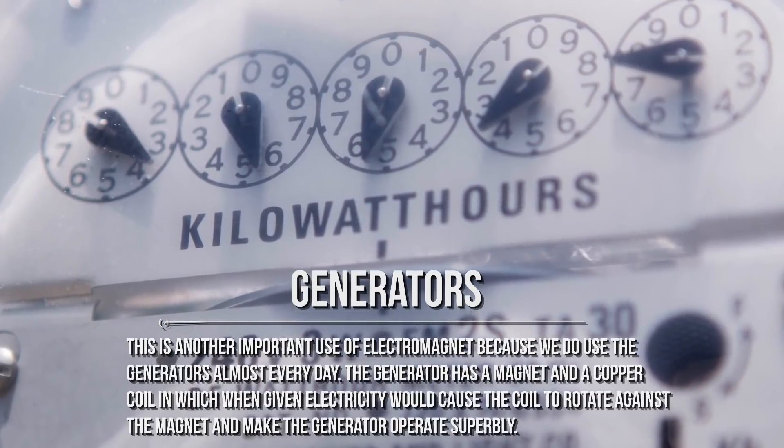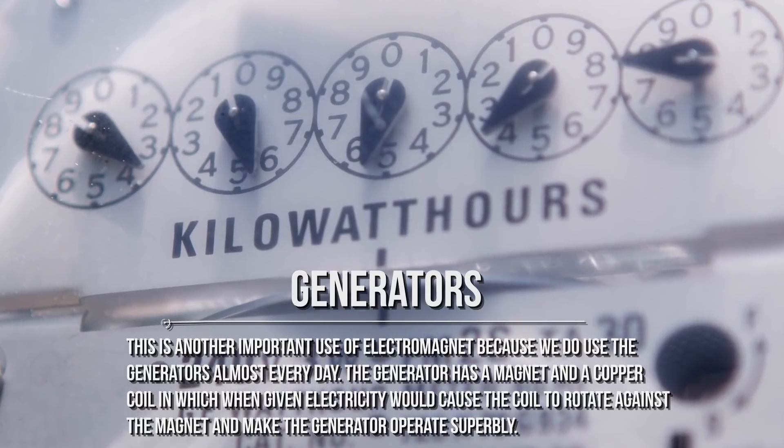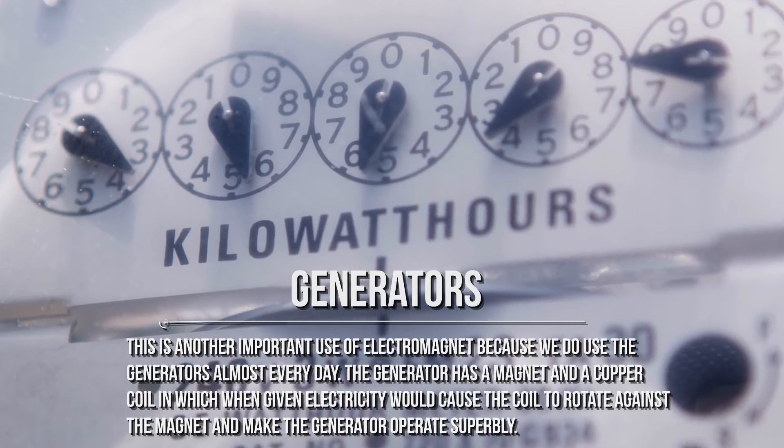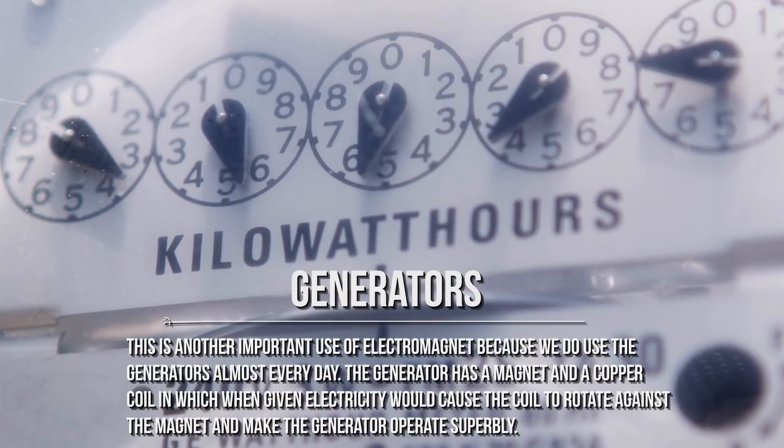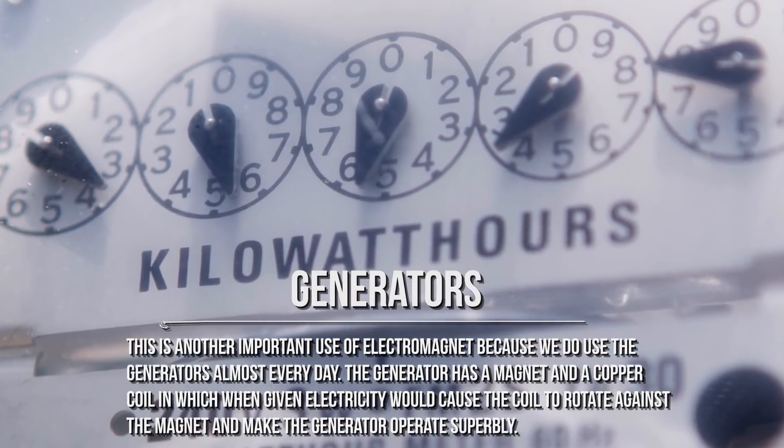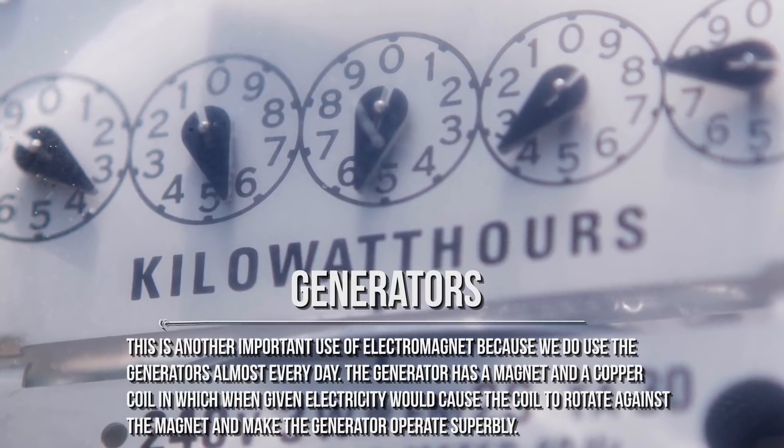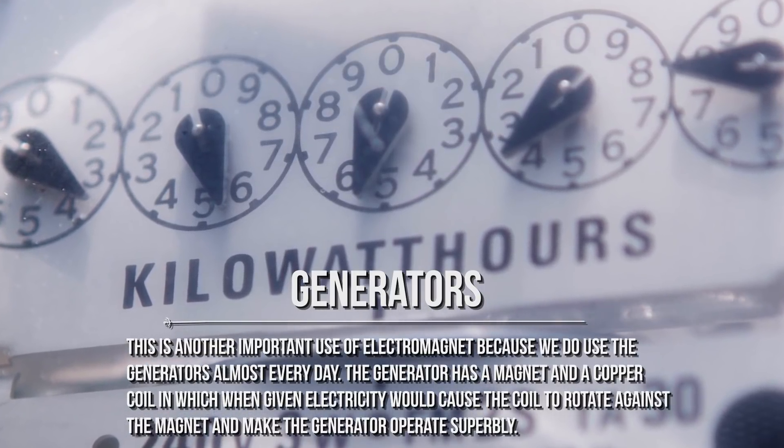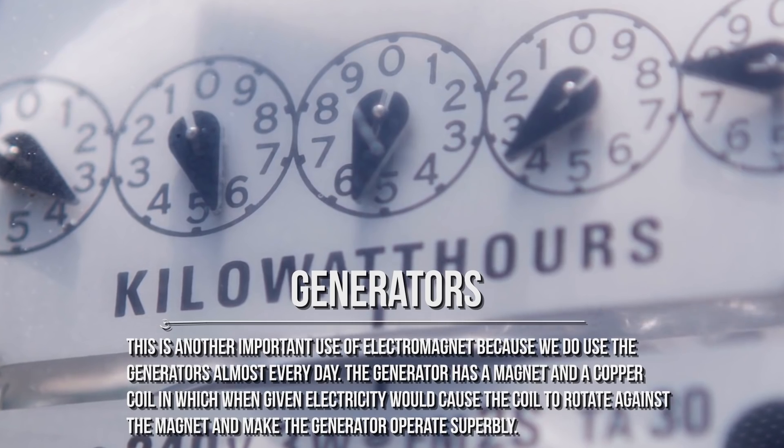Generators. This is another important use of electromagnets because we use generators almost every day. The generator has a magnet and a copper wire coil in which, when given electricity, would cause the coil to rotate against the magnet and make the generator operate superbly.